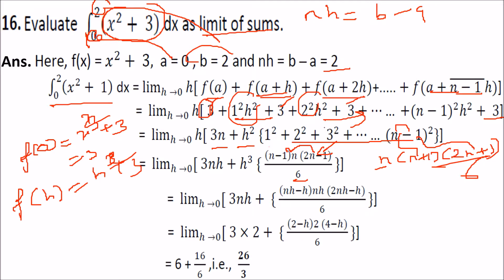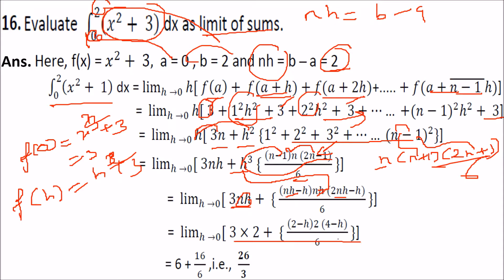Multiply each h inside: (n-1)h, nh, and (2n-1)h = 2nh minus h. Now employ nh equals 2: so nh equals 2, (2nh minus h) becomes 4 minus h, and 3·nh equals 6. As limit h tends to 0, put h equal to 0 and you get 26/3.